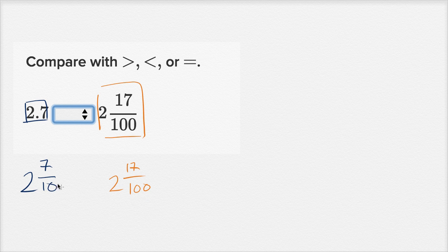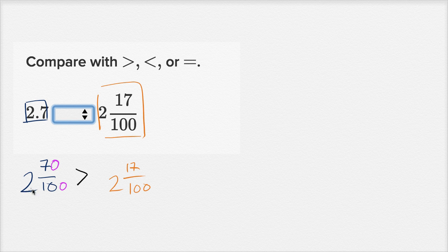If it doesn't jump out at you, you could convert to hundredths. 7 tenths — if you want to convert to hundredths, you multiply the denominator by 10, making the 10 into a hundred, and then you'd also multiply the numerator by 10. So 2 and 7 tenths is the same thing as 2 and 70 hundredths. And 70 hundredths is for sure bigger than 17 hundredths, so 2.7 is going to be greater than this number — it's going to be greater than.